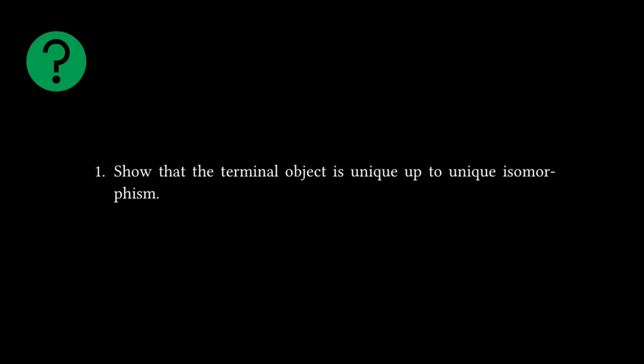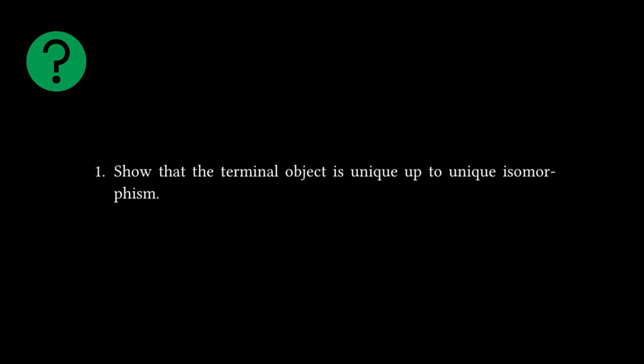So challenge number one, show that the terminal object is unique up to unique isomorphism. This is actually covered in the book. They show a verbal proof for initial, and you can basically just flip the words around for terminal. But this is where I'm going to link the blog that I mentioned earlier.